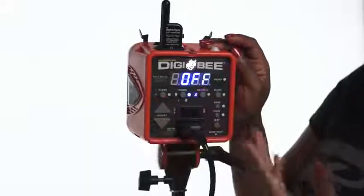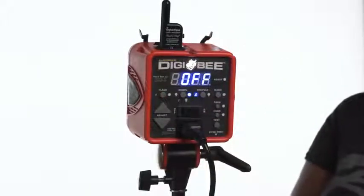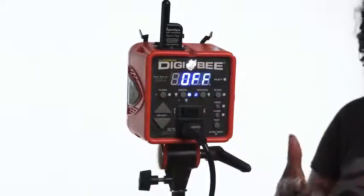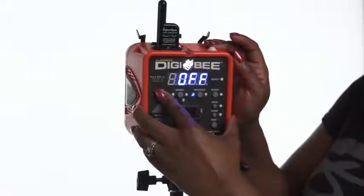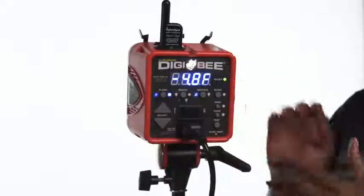The Digibee has two recycle indicators that can be used when the light is in flash adjustment mode. When the music note is highlighted blue, that means the Digibee will beep when it's ready to be flashed again, as we can hear there.